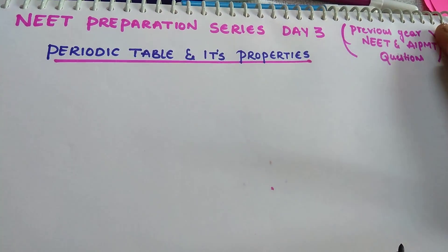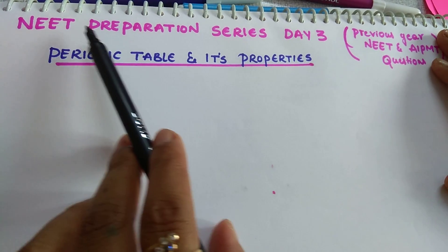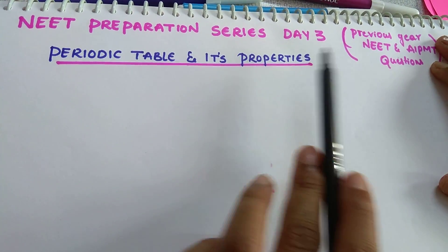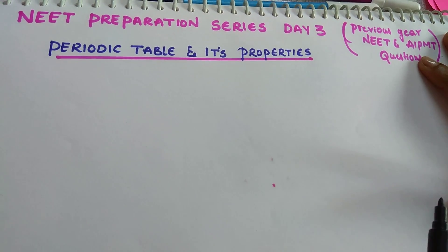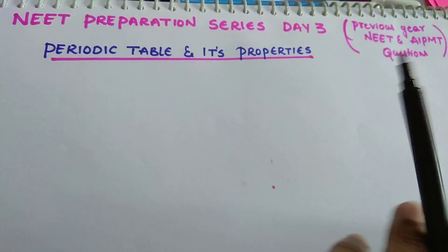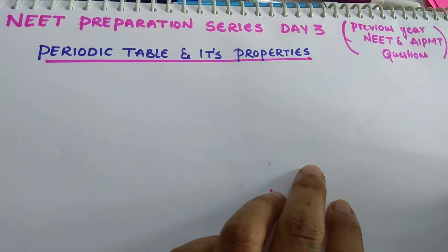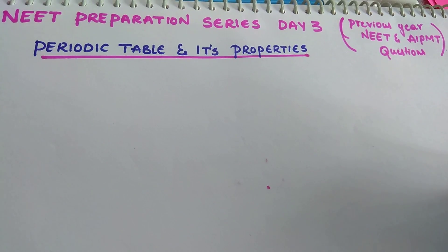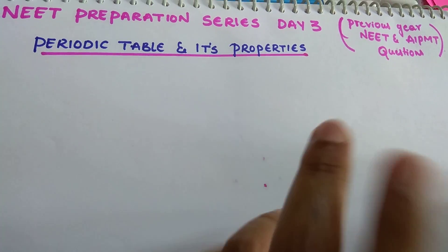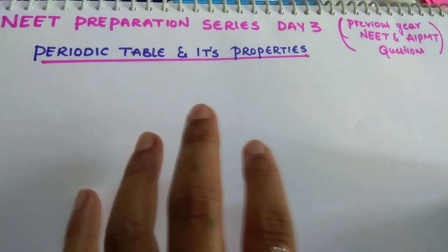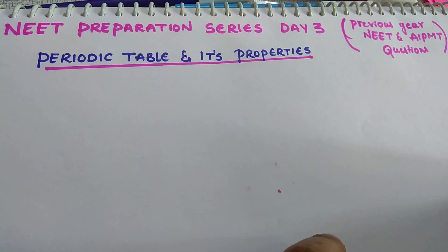Hi students, I hope you are preparing well for your exam. Let us start today's session - NEAT preparation series day 3. This video includes previous year NEAT and APMT questions. Today's chapter is periodic table and its properties. This chapter and chemical bonding are the easiest chapters in inorganic chemistry, and many questions come from these chapters. Chemical bonding is also one of the best chapters - more questions will come.